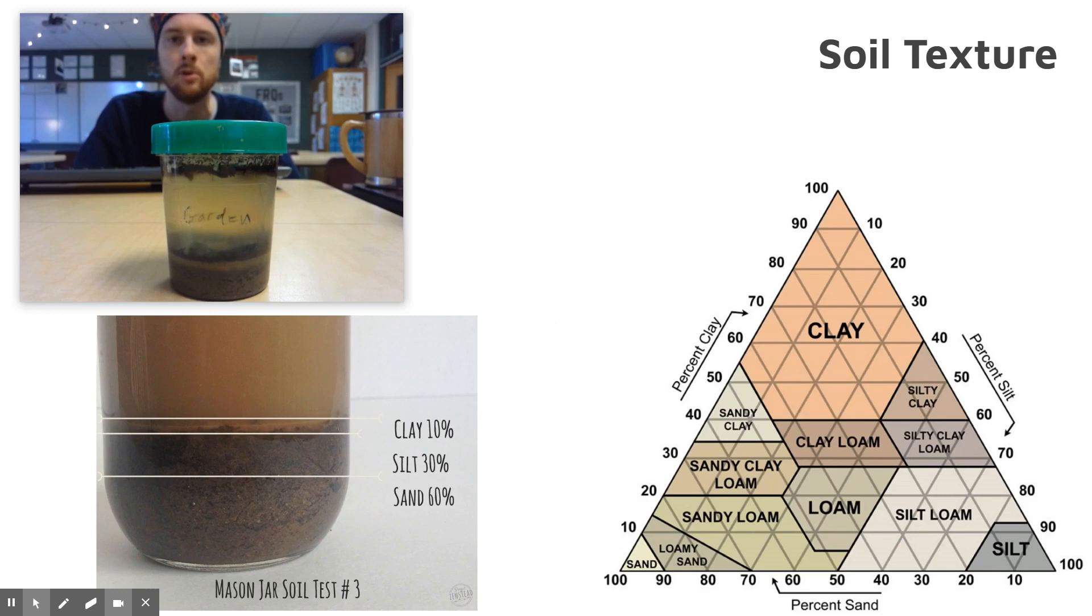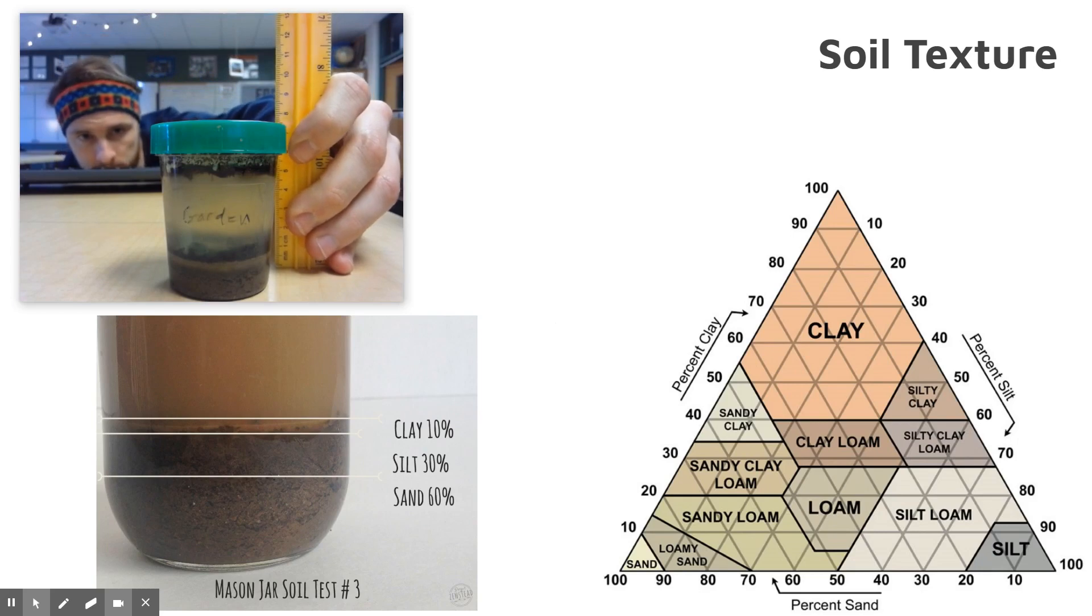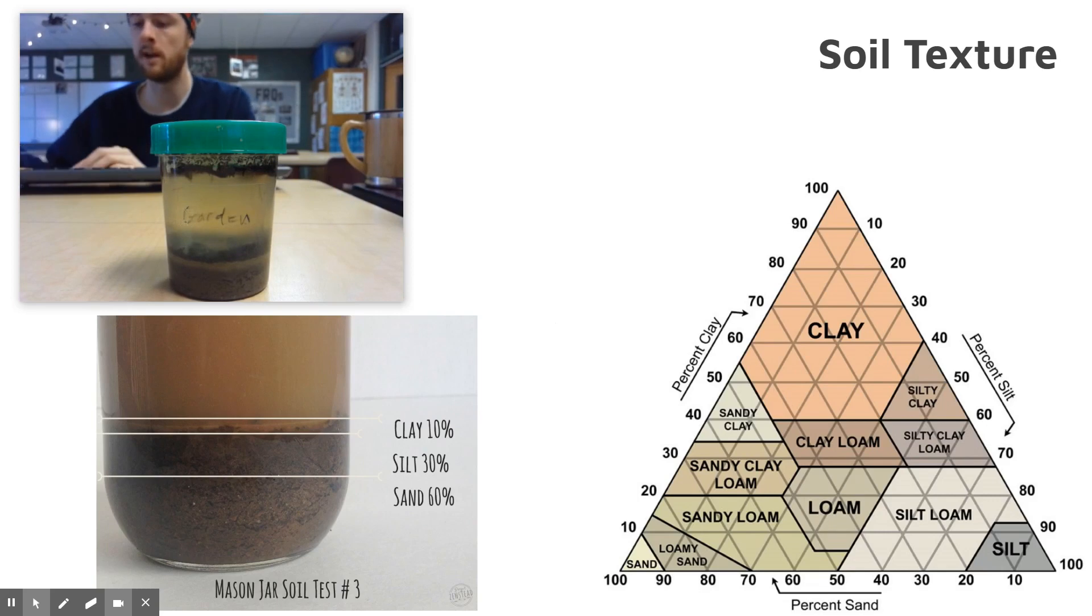You want to keep it consistent throughout your samples. What we have here is a sample from the garden out back that was set out for 24 hours overnight. You also want to drop just one little drop of dish soap into your sample to help give some clarity to your different layers.